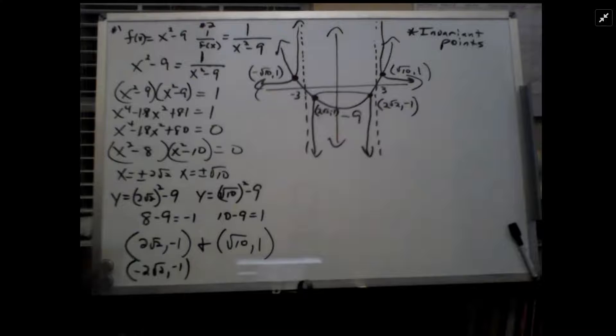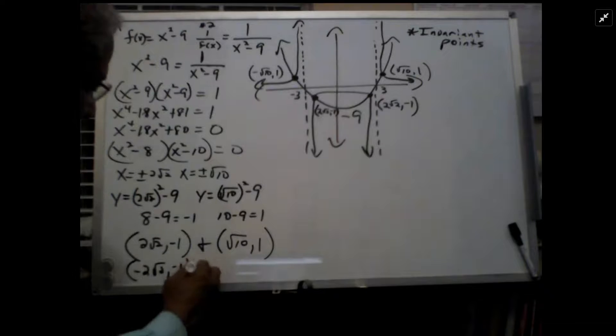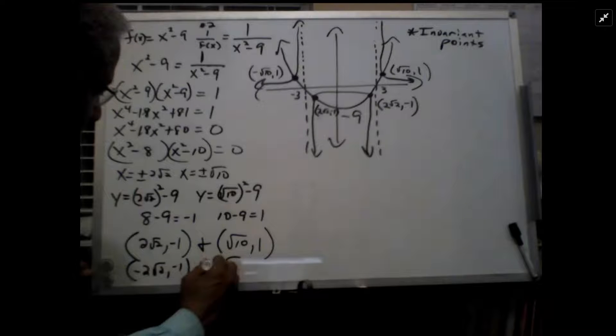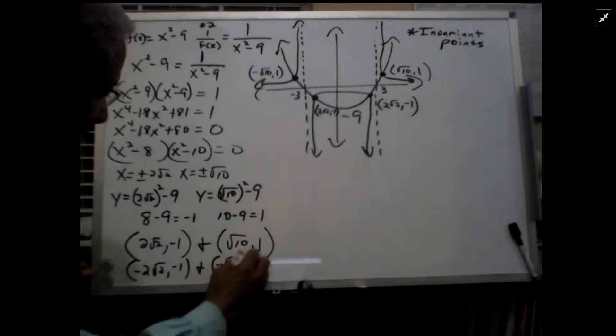And the other point, radical 10 squared minus 9, 10 minus 9 is 1. So I get a radical 10, positive 1, and a negative radical 10, positive 1.